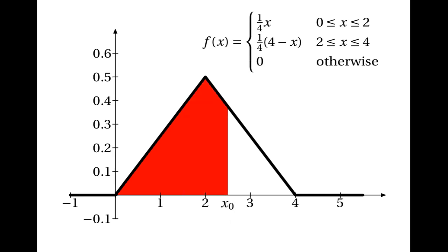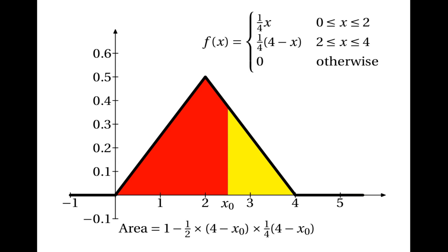The second case is when x0 is between 2 and 4, where we need to work out the red area. It's easier to think about the yellow area and subtract that from 1, because the total area under the probability density function must be 1, so the red area equals 1 minus the yellow area. The yellow triangle has base 4 minus x0 and height a quarter of 4 minus x0, so the yellow area is a half times (4 minus x0) times a quarter times (4 minus x0), and the red area is 1 minus an eighth of (4 minus x0) squared.